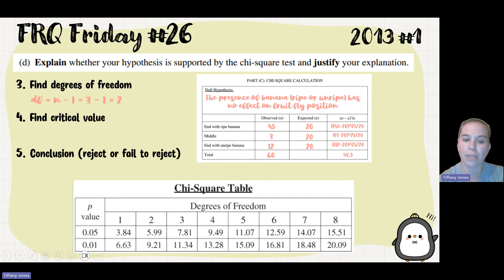I then want to figure out what my critical value is. So I look at two, and then I say, okay, well, my p-value is 0.05. So that tells me that's 5.99. So degree of freedom of two, p-value of 0.05, and that gives me 5.99.